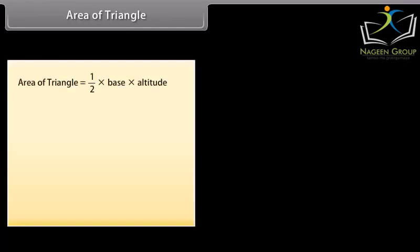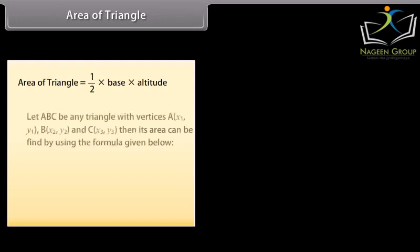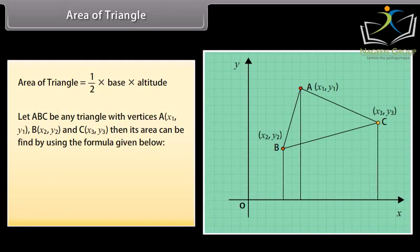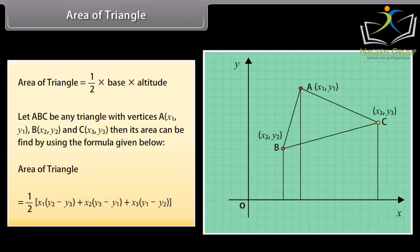Area of triangle. In earlier classes, when the base and altitude of triangle is given, then we find its area by using the formula, area of triangle is equal to 1 by 2 into base into altitude. Let ABC be any triangle with vertices a, x1, y1, b, x2, y2 and c, x3, y3, then its area can be find by using the formula given below. Area of triangle equals 1 by 2 into x1 into y2 minus y3 plus x2 into y3 minus y1 plus x3 into y1 minus y2.